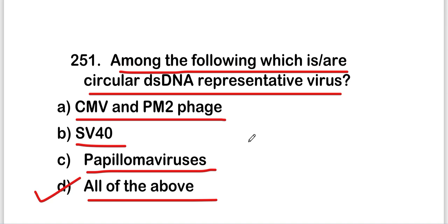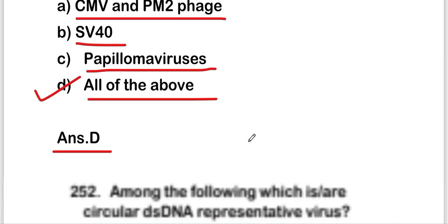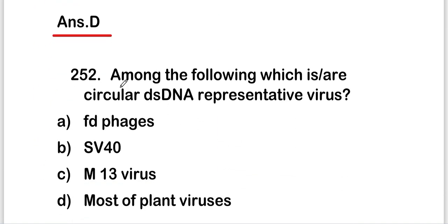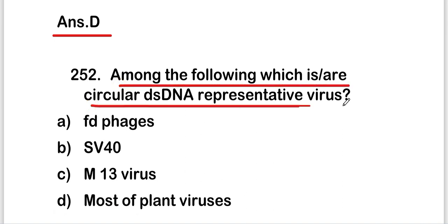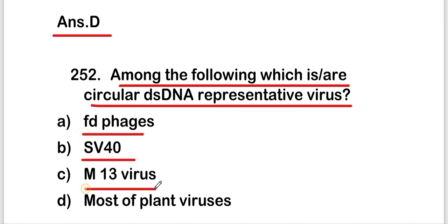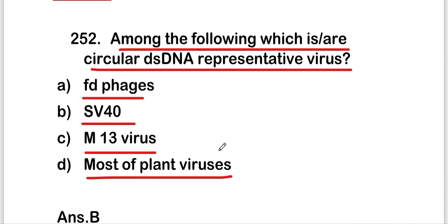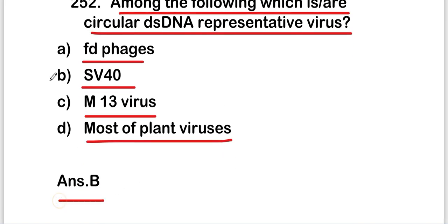The next question: among the following, which is or are circular double-stranded DNA representative viruses — fd phage, SV40, M13 virus, or most of the plant viruses? The right answer is option B — SV40. SV40 is a circular double-stranded DNA representative virus.